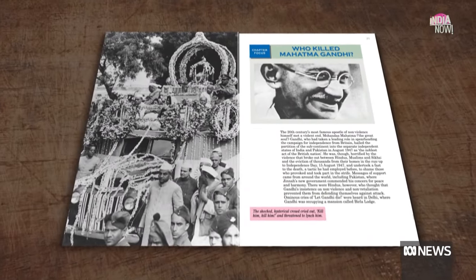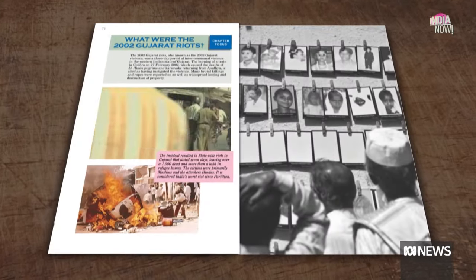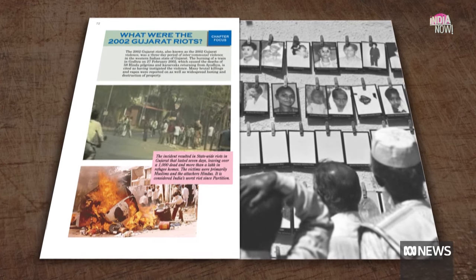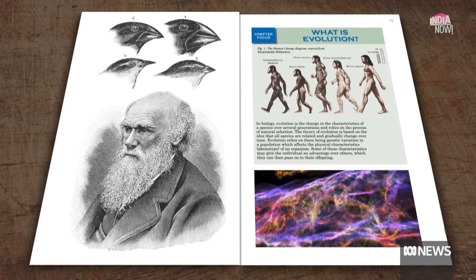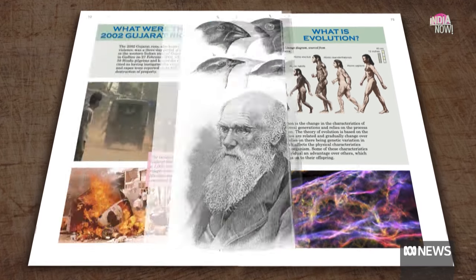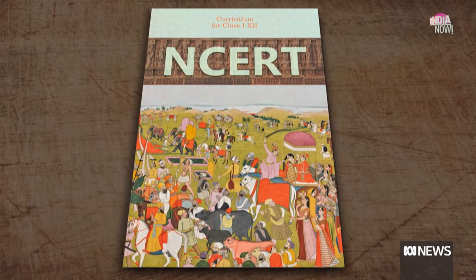Why was Mahatma Gandhi killed? What were the 2002 Gujarat riots? What is evolution? For students in India now, these pretty key questions may no longer be answered in your textbook. One teacher said: 'I haven't heard of history chapters being removed before this, and I've been teaching from 1981.' The books no longer mention that Nathuram Godse, the man who killed Gandhi, had ties to Hindu extremists.